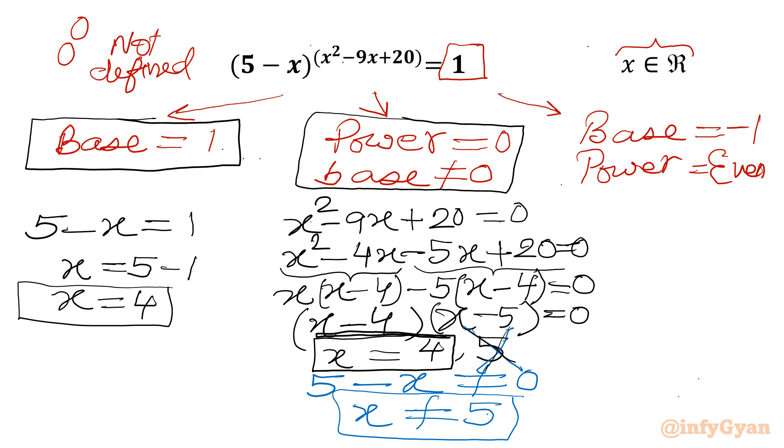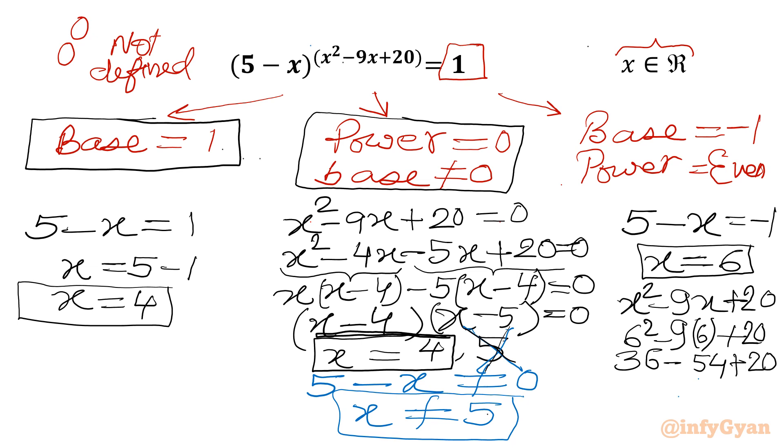Now our third case, base is negative 1. So I will write 5 minus x equal to negative 1. So from here I can get x equal to 6. Now power should be even. Let's check: x square minus 9x plus 20, this is power, x equal to 6. So 6 square minus 9 times 6 plus 20. 6 square is 36, 9 times 6 is 54 plus 20. So 56 minus 54, we will get 2 and 2 is even number. So x equal to 6 would be accepted.